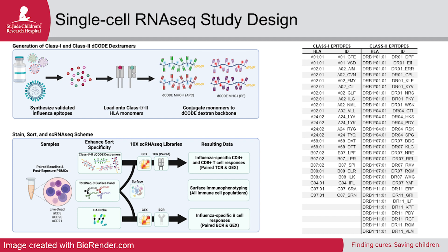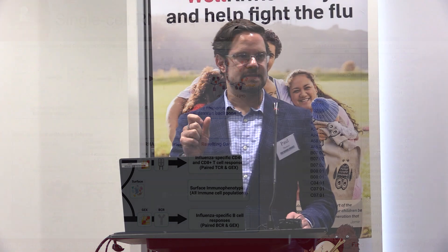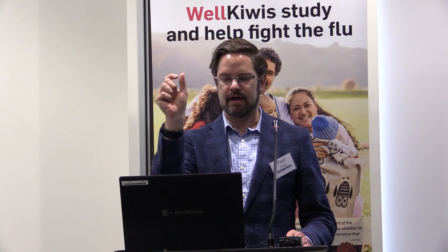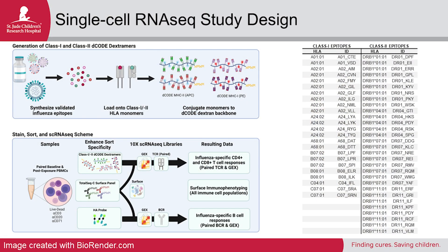T cells only see very small pieces of the virus, and we all see different parts of every virus. The parts of the virus that T cells see are determined by the protein complex called HLA — the transplant antigen you're matching when you get an organ transplant. For every person, we have to construct a custom kit of tools to interrogate their T cell responses. Each line here is an antigen from flu virus in the context of a particular HLA. When we wrote the proposal, each one of these probably cost about $2,000–$3,000 to make, but it's much cheaper now, so it's actually feasible.